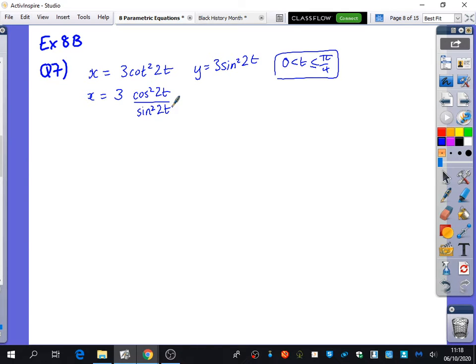So right now, that's cool, because we could actually substitute in something for sine squared t from y, but I don't have something for cos squared t. How do you think I could use this part to find out what cos squared 2t is? What identity would link sine squared and cos squared together?